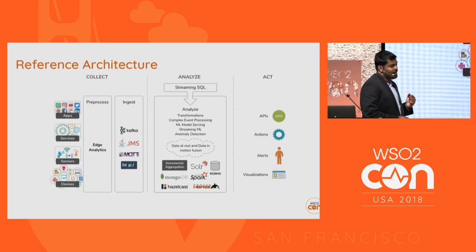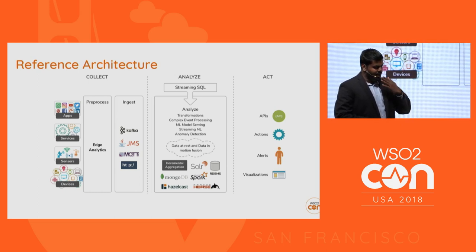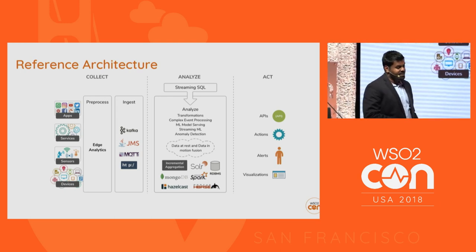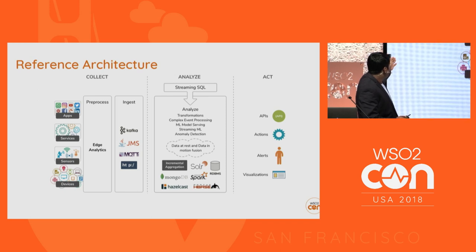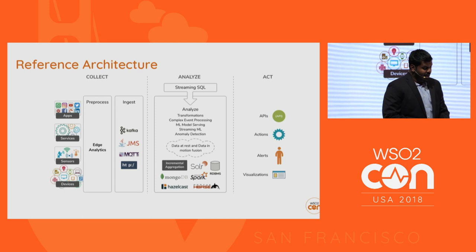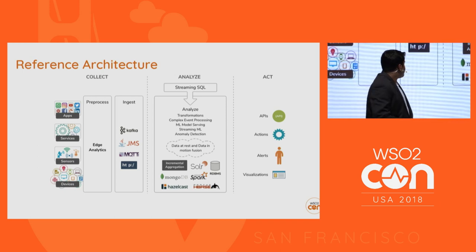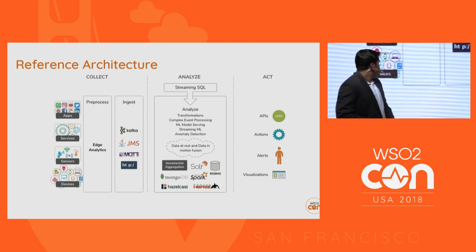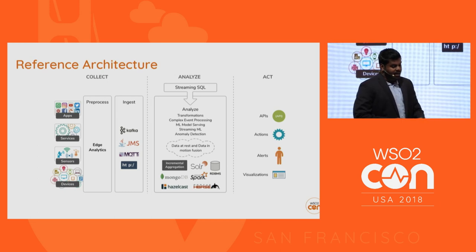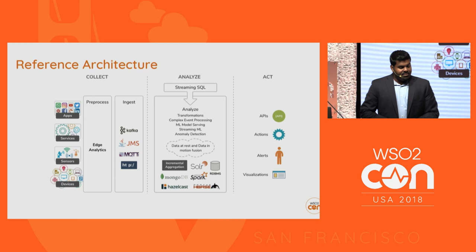To achieve this, there are three phases: collect, analyze, and act. You collect data from multiple sources — apps, services, sensors, and devices — with different protocols and formats, pre-processing at the edge. Then you execute the analytic part through streaming SQL, doing transformation, complex event processing, and anomaly detection. As a result, you produce digital outputs: APIs, actions, alerts, or visualizations. This is the reference architecture.